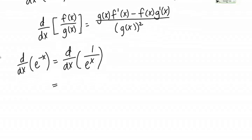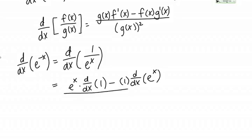So g of x f prime of x. That's the first part. So that's going to be e to the x times the derivative of 1 minus f of x g prime of x. That's top times the derivative of the bottom. So 1 times the derivative of e to the x all over the bottom squared, e to the x quantity squared.